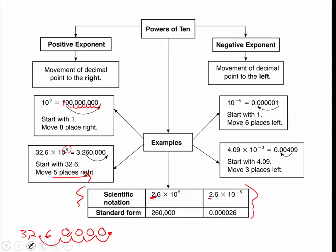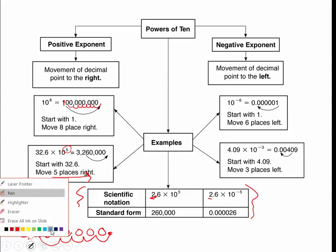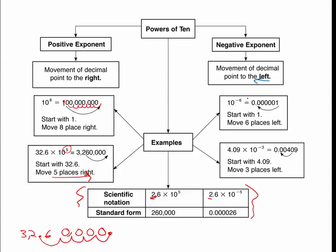Now let's look at some negative exponent problems. If you have a negative exponent, you'll move your decimal point to the left. For example, 10 to the negative 6: you start by writing a 1. Remember there's an imaginary decimal point after it, and then move 6 places to the left. Put the decimal point at the beginning because it matters there, and fill in all your bumps with zeros. You do not just automatically add zeros to the front or back — you have to move the decimal point that many times and then fill in with zeros as needed.